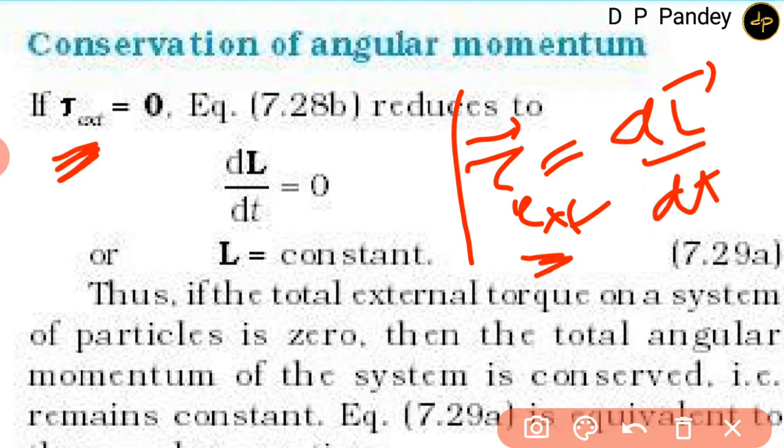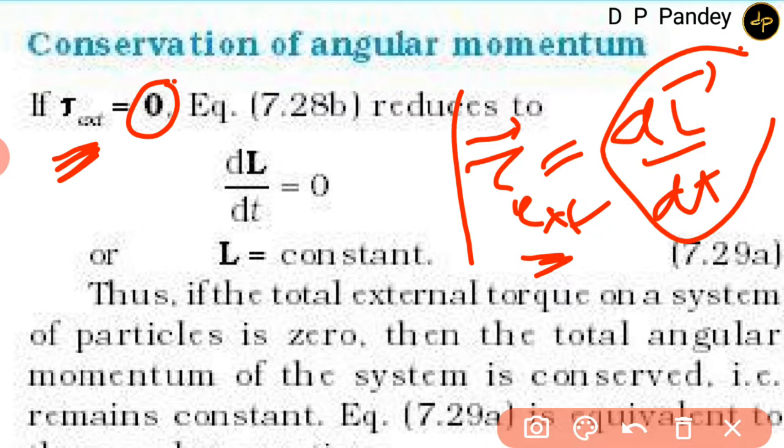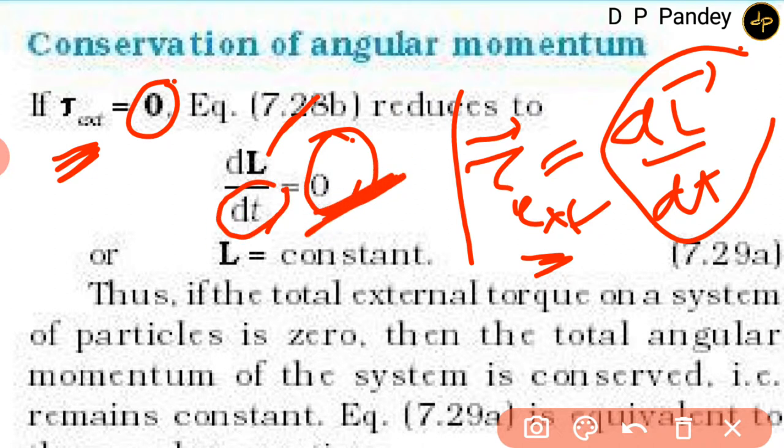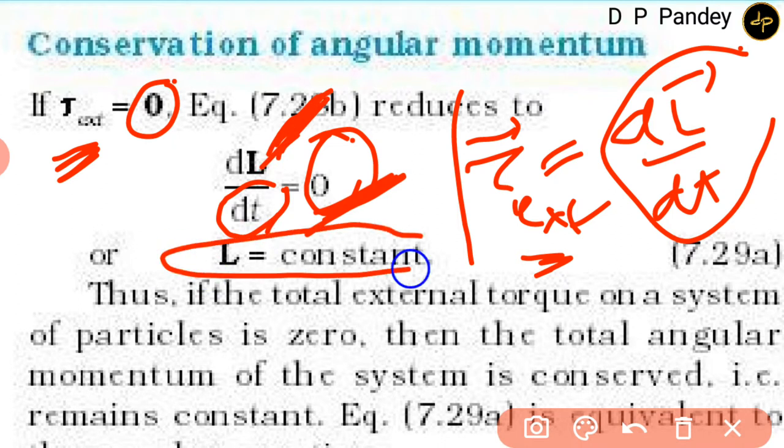If the external torque on a rigid body is zero, then we find that dL/dt, the rate of change of angular momentum, is zero. That is, the change in L with respect to time is not occurring—L will be constant. The angular momentum of a rigid body remains constant if external torque is not acting on the system.